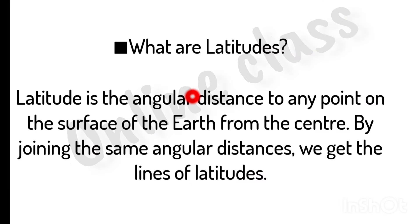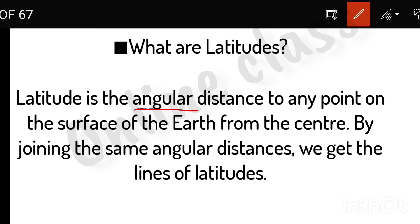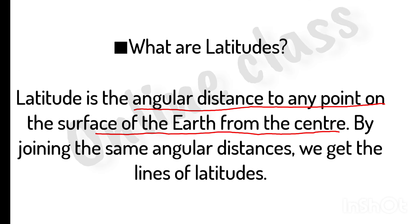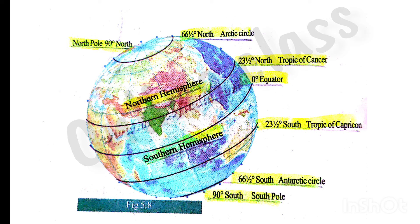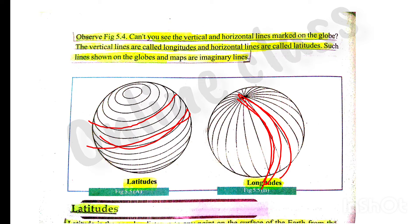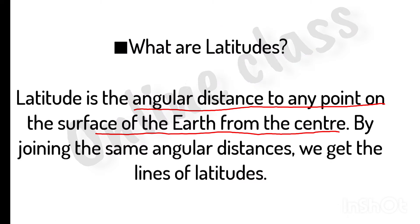What are latitudes? Latitudes are the angular distance to any point on the surface of the earth from the center. By joining the same angular distance, we get the line of latitudes.